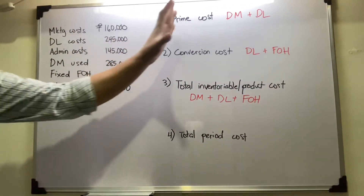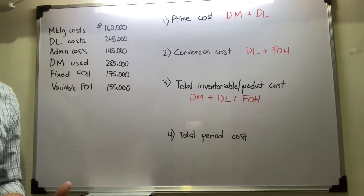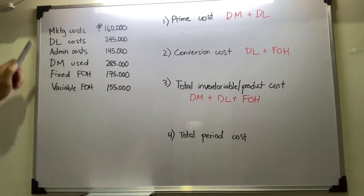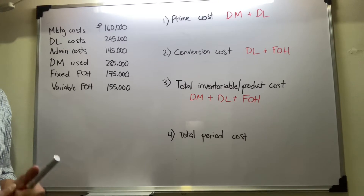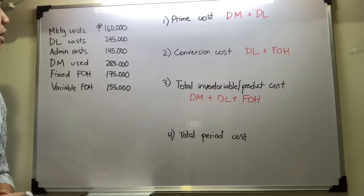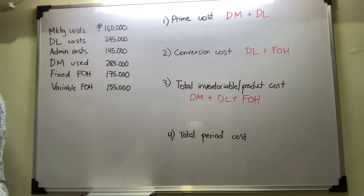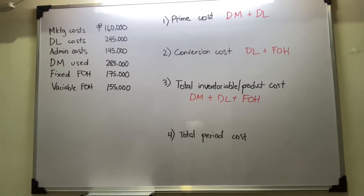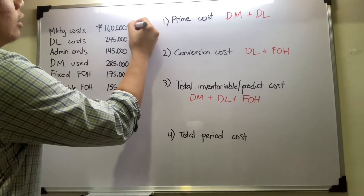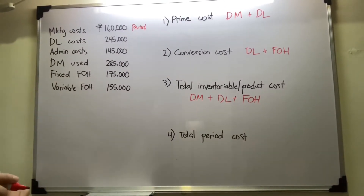Before solving this, let's first determine which items are product or period cost. For marketing cost — is this classified as product or period cost? Product cost is included as part of the cost of the finished goods, while period cost is expensed outright. Since marketing cost has nothing to do with production, you cannot trace it to the finished goods inventory, so this is classified as period cost.